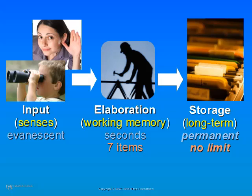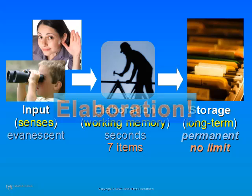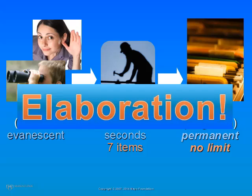Once information makes its way to long-term storage, it is permanent, and there does not appear to be any limit in the information that can be stored in long-term memory. However, getting that information back out from long-term storage can sometimes be a problem. Being able to retrieve the right information later on depends in large part upon the effectiveness of elaboration. Thus, elaboration is the critical step in learning.